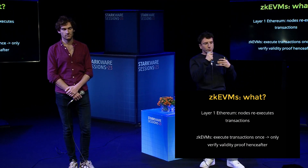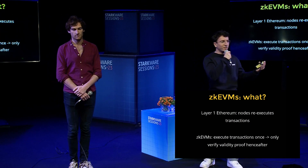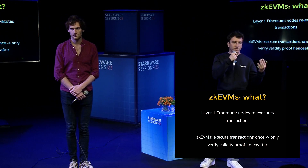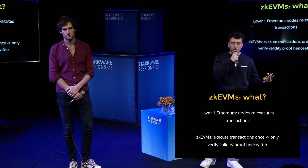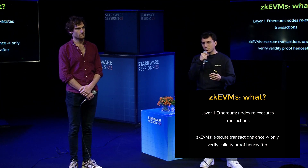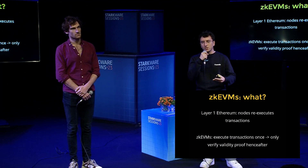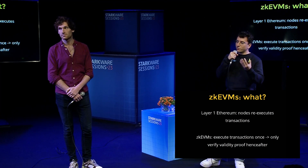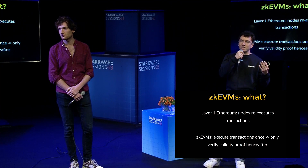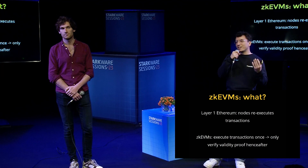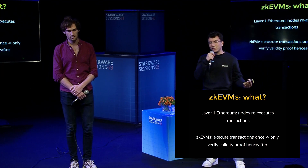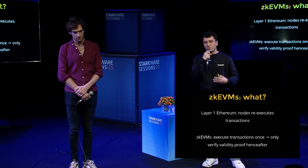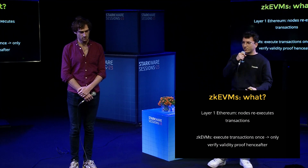In layer one Ethereum, when you send a transaction, it's re-executed by every node in the network to check its validity. Whereas in a ZK context, in ZK rollups, you execute your transaction once, you generate a validity proof, and for the rest of the time it's going to be validated. In rollups, you batch a lot of transactions and you validate the state diff.